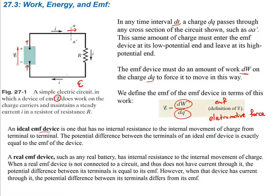When a real EMF device is not connected to a circuit and thus does not have current going through it, the potential difference between its terminals is equal to its EMF — like the ideal. However, when that device has current through it, the potential difference between its terminals differs from its EMF. We know this because oftentimes batteries heat up, so there's some internal resistance giving off thermal energy.